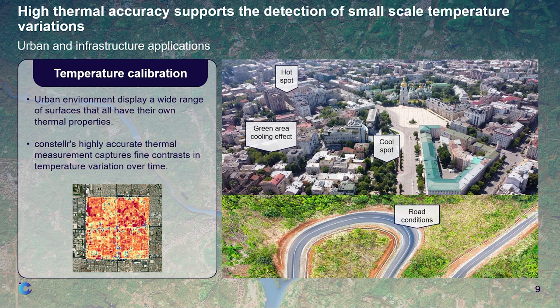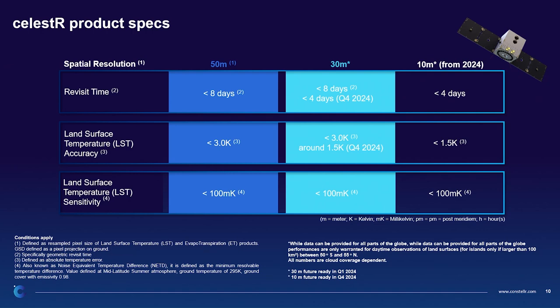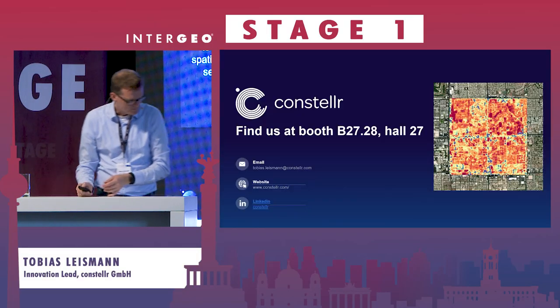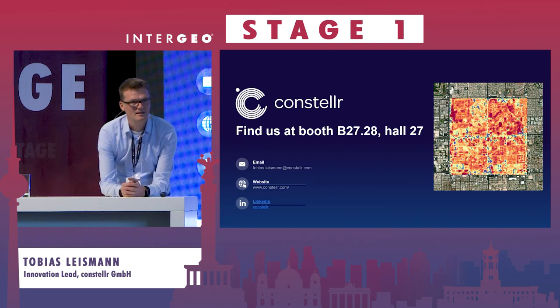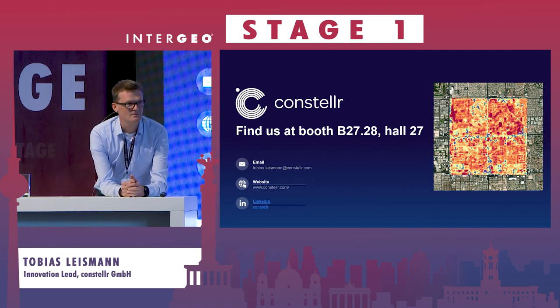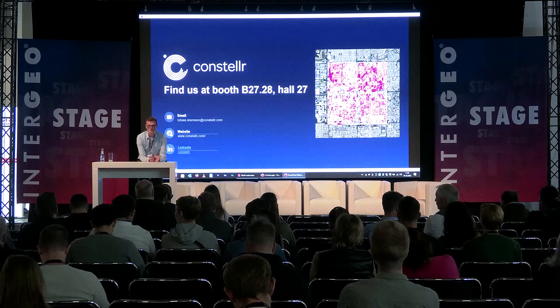What you really want to know is the green areas that have a cooling effect, the cool spots, the hot spots, and road conditions where the road gets too hot. We use that for calibration for local weather measurement and you can integrate the thermal data from our satellites. I have some products at our booth, but they're too small to read here, so I invite you to come to our booth at B27 in Hall 27 to discuss. I think I'm already done — if you have any questions, please go ahead.